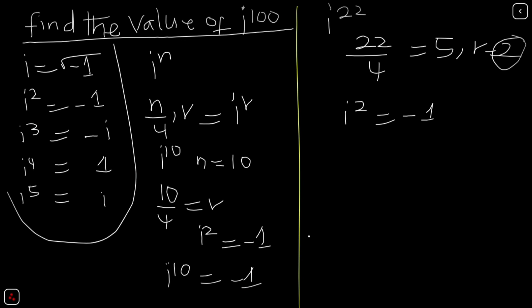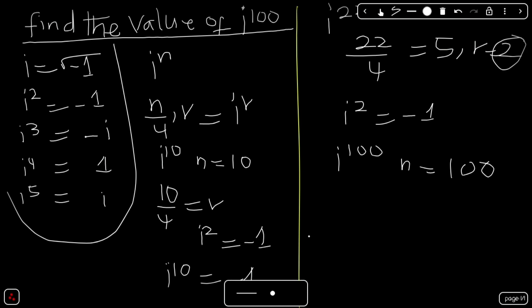Find the value of i raised to the power of 100. n here is 100, so we have 100 divided by 4. That gives us 25 and a remainder of 0. What we are only interested in is the remainder, so we have i raised to the power of 0. Any number raised to the power of 0 is 1.